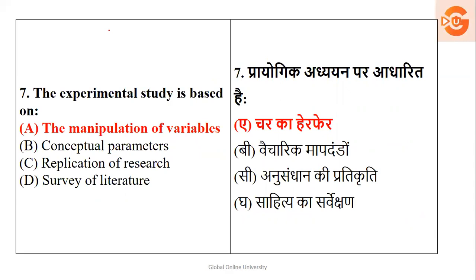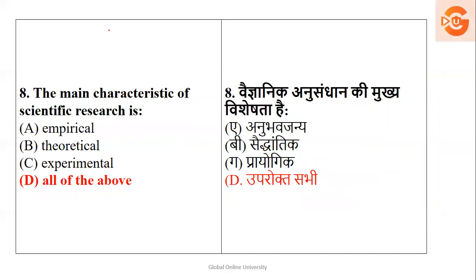Next: the experimental study done by a researcher is based on what — manipulation of variables, conceptual parameters, replication of research, or survey of literature? Some degree of fabrication is allowed and possible, so basically it is the manipulation of variables.